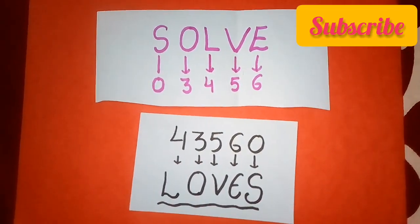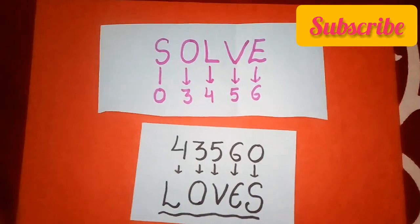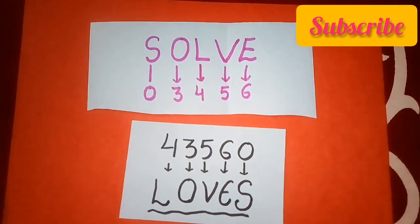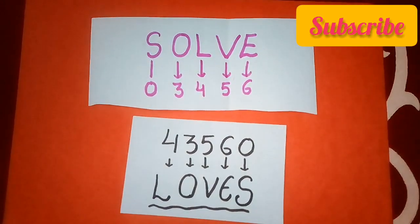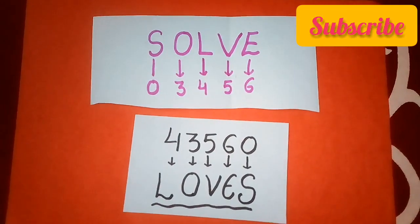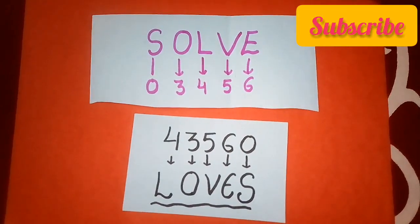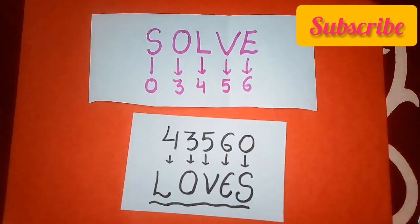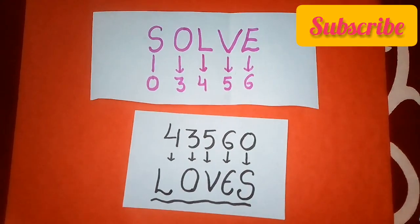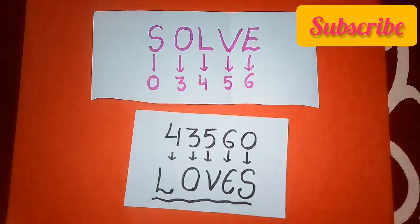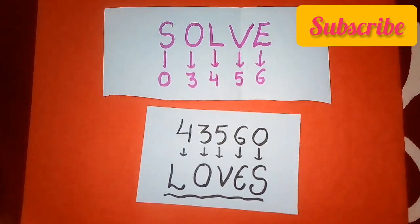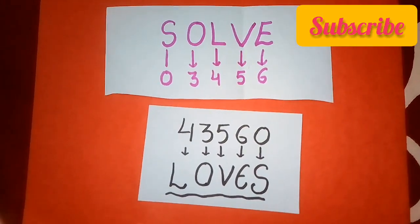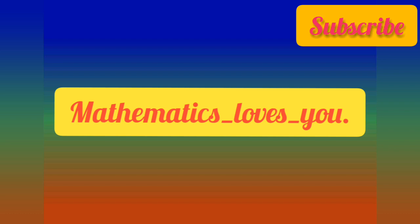Code for 4 is L, and for 3 it is O, and for 5 it is V, and for 6 it is E, and for 0 it is S. It means the answer for the code 4 3 5 6 0 is L O V E S. Fill it in the blank and what you will get? Mathematics loves you.